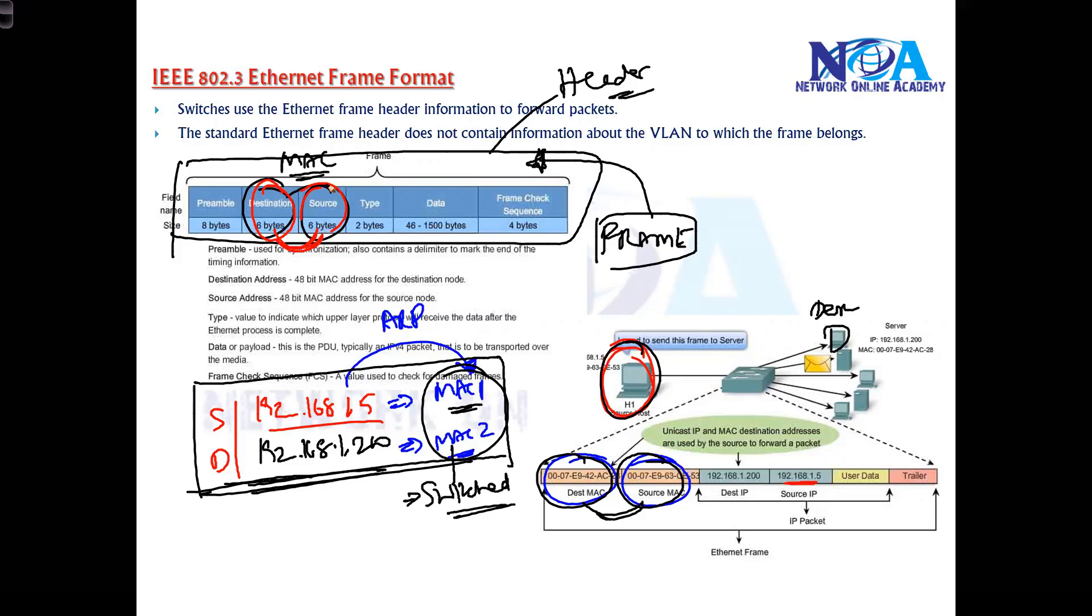All your layer 2 devices actually see the MAC addresses and based on the MAC address it will figure out where the destination is. As said already, switch is an intelligent device which knows exactly which can store the MAC addresses in the MAC table and it can forward according to that.